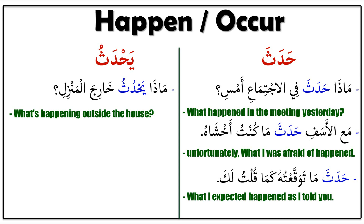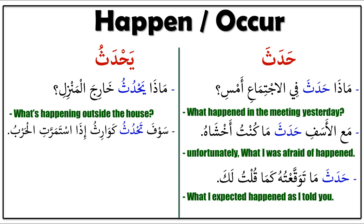Next sentence: سَوْفَ تَحْدُثُ كَوَارِثُ إِذَا اسْتَمَرَّتِ الْحَرْبُ — sawfa tahduthu kawaarith idha istamarat al-harb — it means 'disasters will happen if the war continues.' Sawfa tahduthu means will happen, kawaarith means disasters, idha istamarat means if it continues, al-harb means the war.